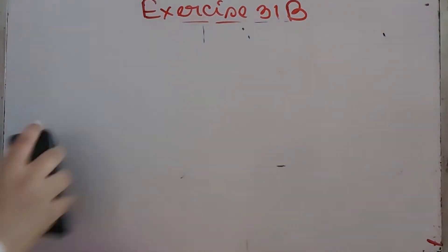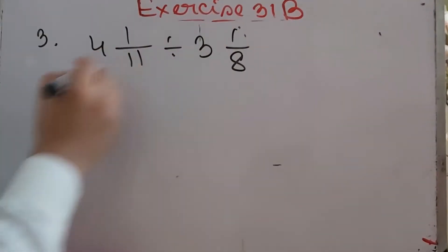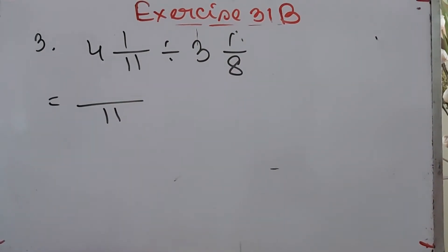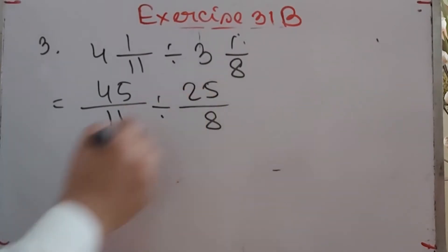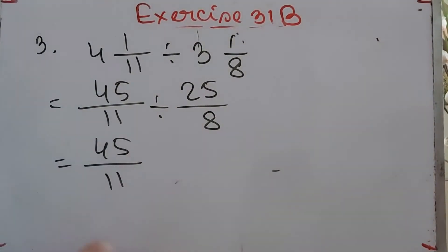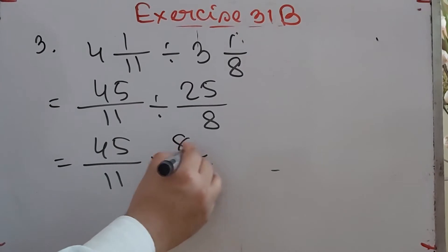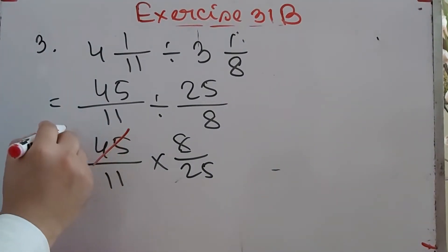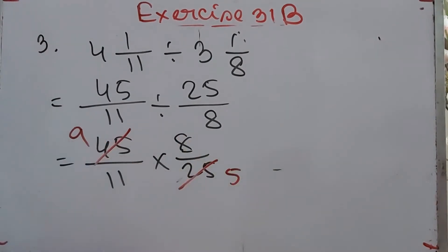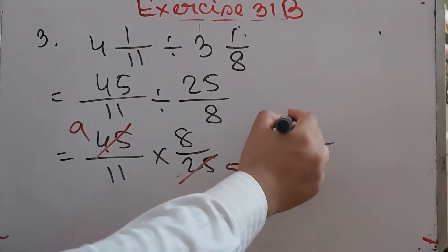Number 3: 4 whole 1/11 divided by 3 whole 1/8. Convert: 11×4 = 44 plus 1 = 45/11, and 8×3 = 24 plus 1 = 25/8. To divide, multiply 45/11 by the reciprocal of 25/8, which is 8/25. We can divide 45 and 25 by 5, giving 9 and 5. So the answer is (8×9)/(11×5) = 72/55.